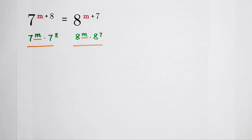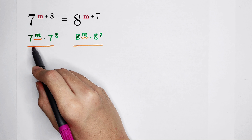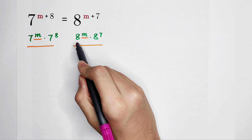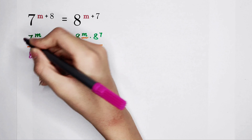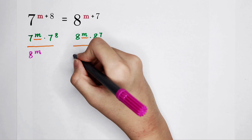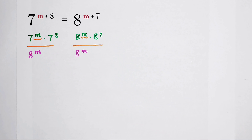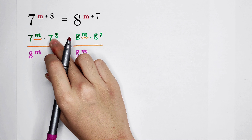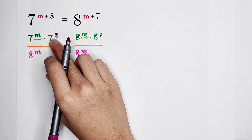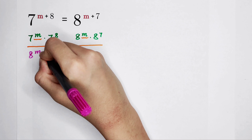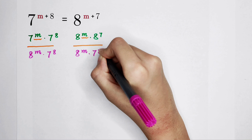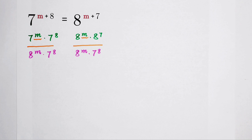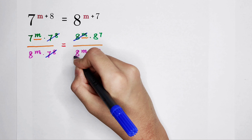What should we do? We have to divide them by something. Since 7 to the power of m is on the left-hand side, and 8 to the power of m is on the right-hand side, we have to divide first by 8 to the power of m, and then by 7 to the power of 8 on both sides. So 7 to the power of 8 cancels, and 8 to the power of m cancels.